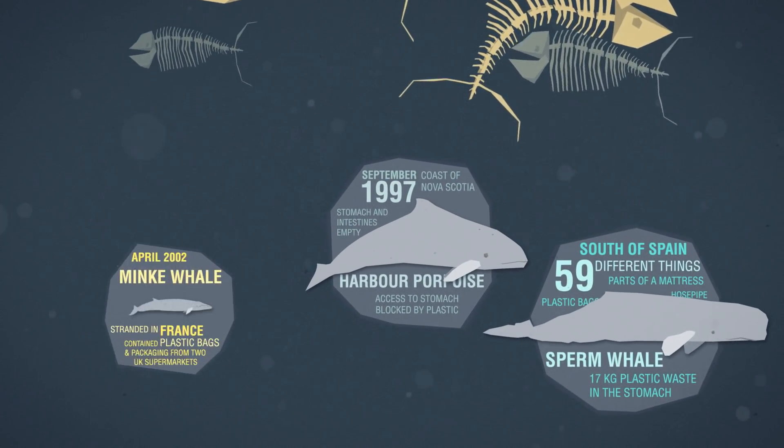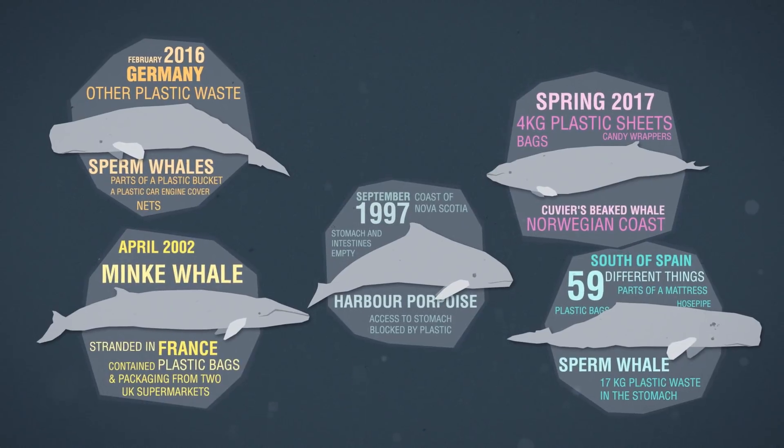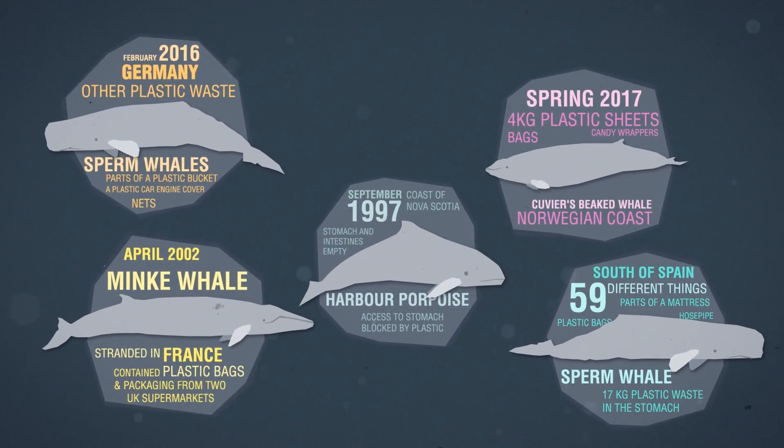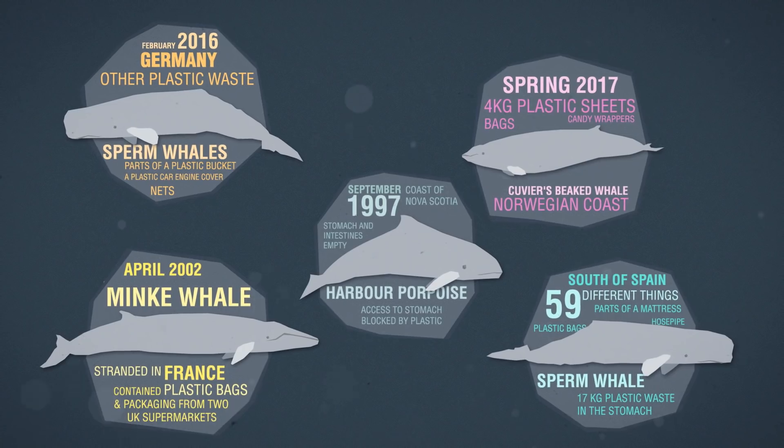Plastic packaging, nets, and bags have been found in at least 462 individual whales and dolphins. That's 56% of all whale and dolphin species.